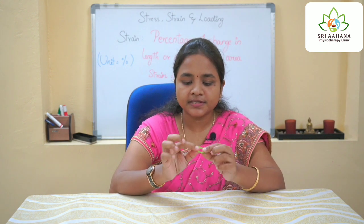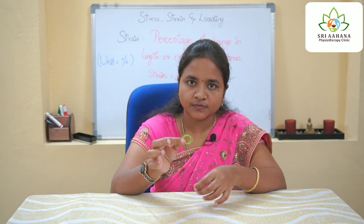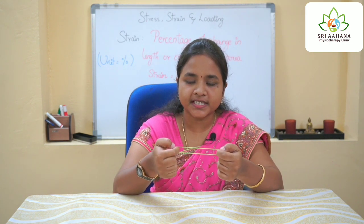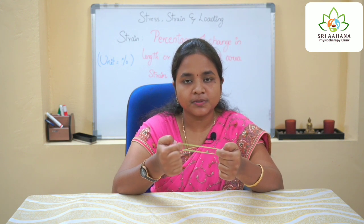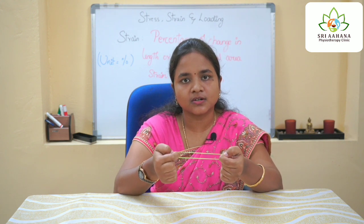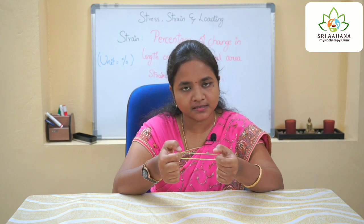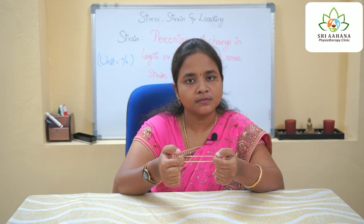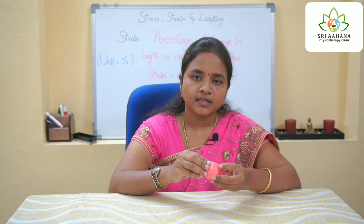Now passing on to strain — this is the normal original length of the rubber band. When I put the pressure and expand it, the new length — the percentage of change in length — is called strain. The unit of strain will be percentage.